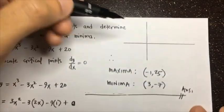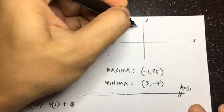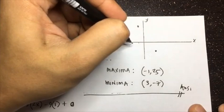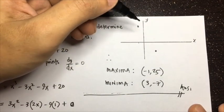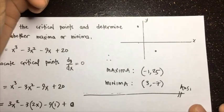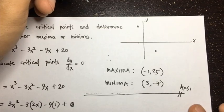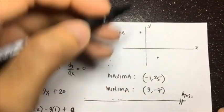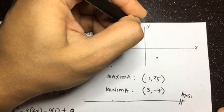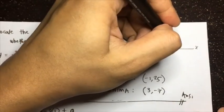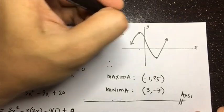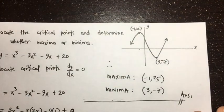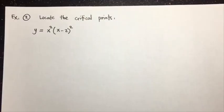If we graph this function, we have our maxima at (-1, 25) and our minima at (3, -7). Since (-1, 25) is a maximum point, the curve rises to that peak and then descends to the minimum at (3, -7). So we can sketch the general shape of the graph from this information alone.